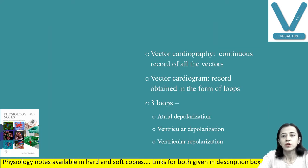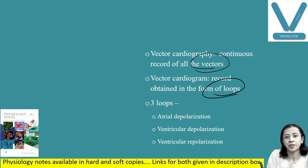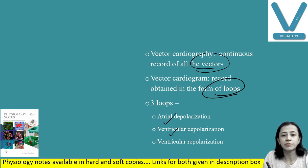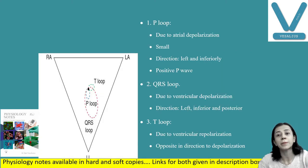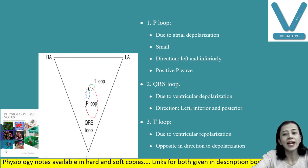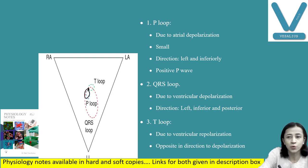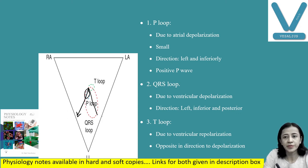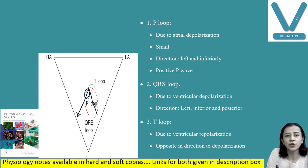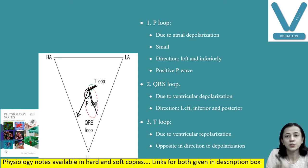Another important small topic is vector cardiography. When we continuously record all the vectors, we find three loops: a P loop due to atrial depolarization, a QRS loop due to ventricular depolarization, and a T loop due to ventricular repolarization. The P loop is small and directed leftward and inferior, giving a positive P wave. The QRS loop is the largest and directed leftward, inferior, and slightly posterior. The T loop is due to ventricular repolarization and is opposite to the direction of depolarization.